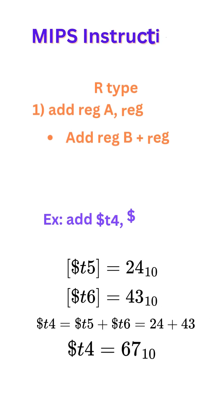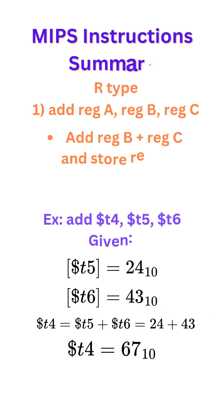MIPS instruction summary. First we're going to go through our R-type. Add register A, register B, register C. This instruction basically adds register B plus register C and stores the value in register A.